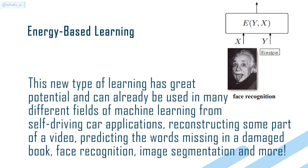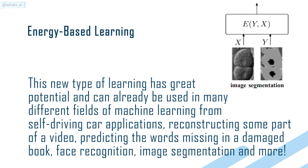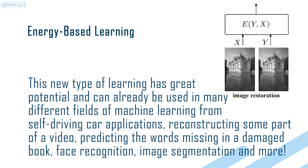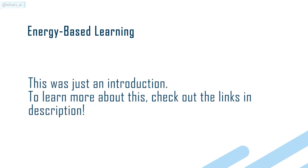This new type of learning has great potential and can already be used in different fields of machine learning, from self-driving car applications, reconstructing parts of a video, predicting the words missing in a damaged book, face recognition, image segmentation, and more. This was just an introduction — to learn more about this, check out the links in the description.